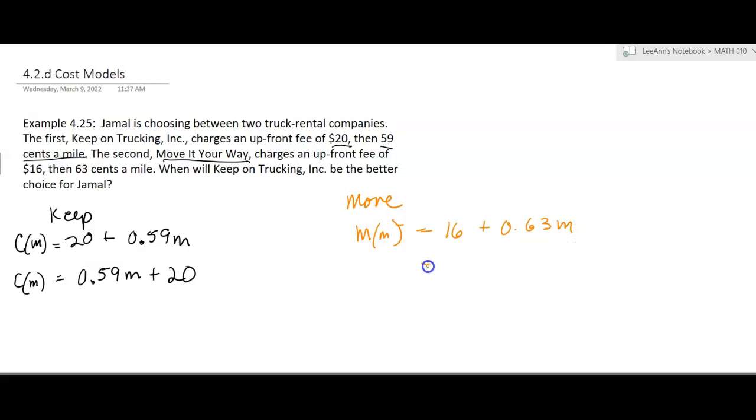So then that function is going to be 0.63m plus 16. So it might seem like this first one is cheaper. It's got a cheaper rate per mile, but it's got a higher flat fee, an upfront fee. So this one might be better, but then maybe this one might be better. It just depends on how many miles you're driving.